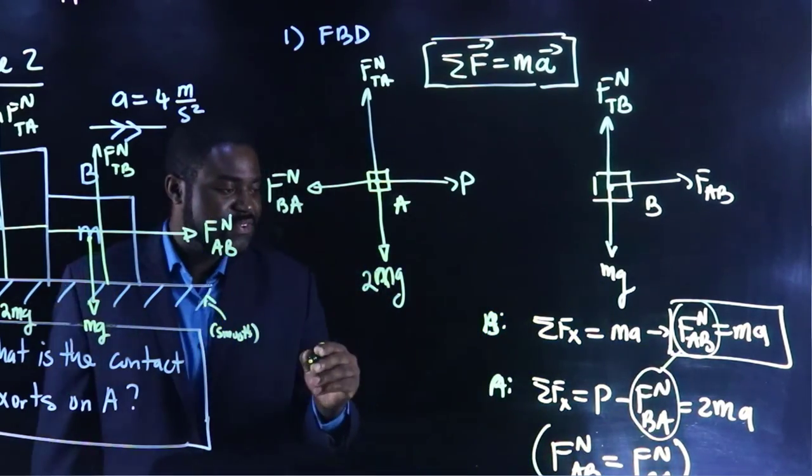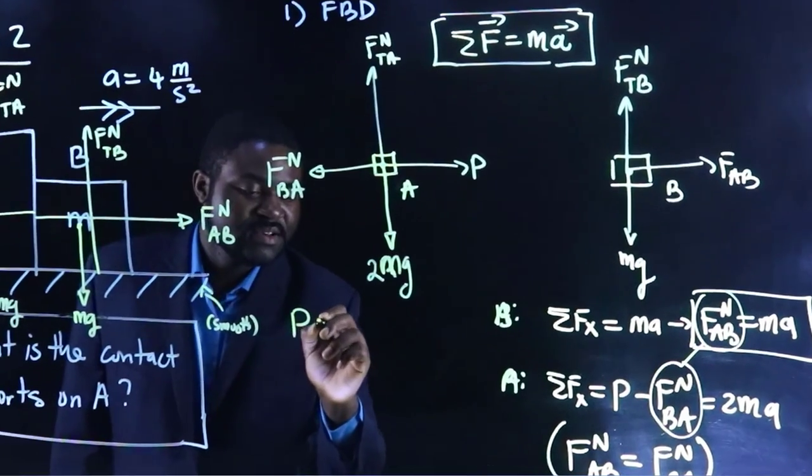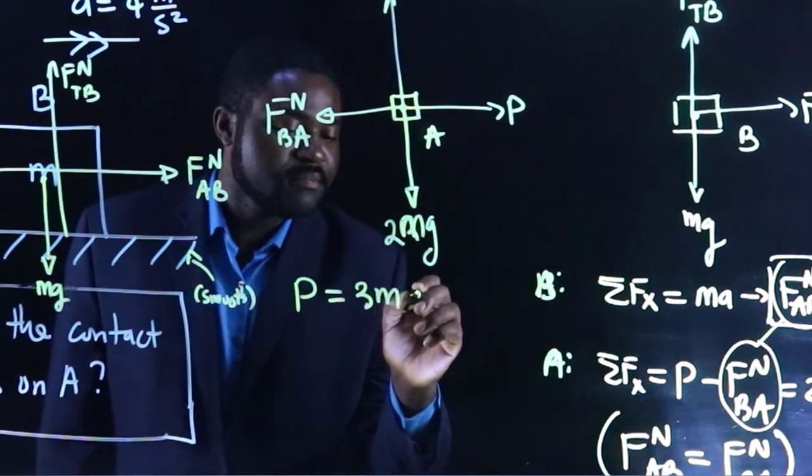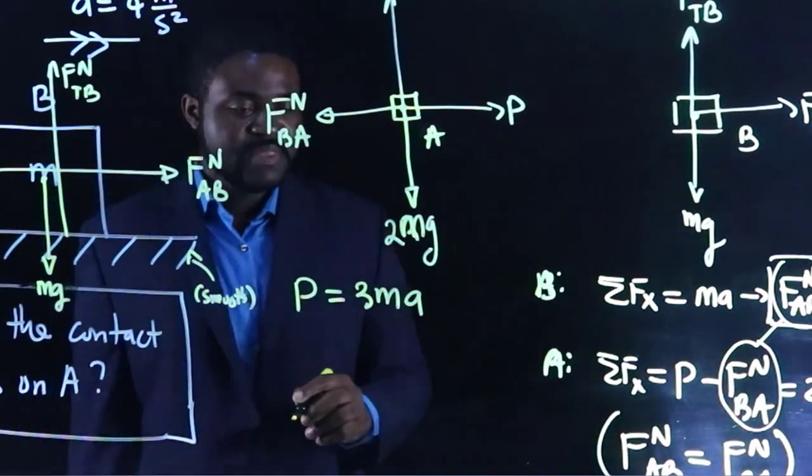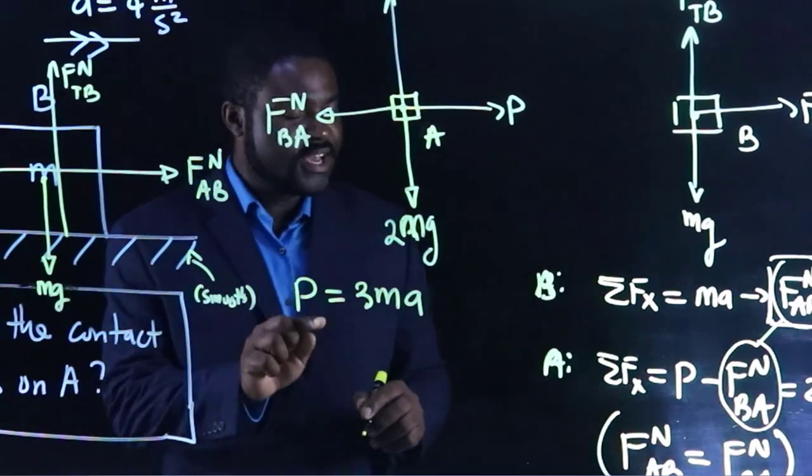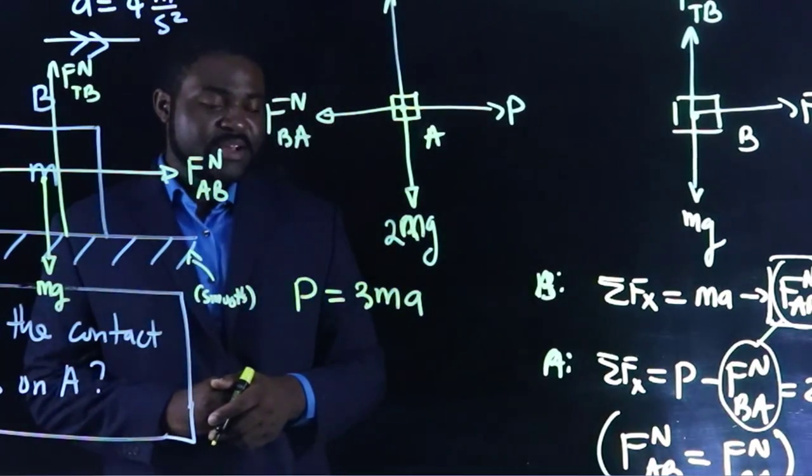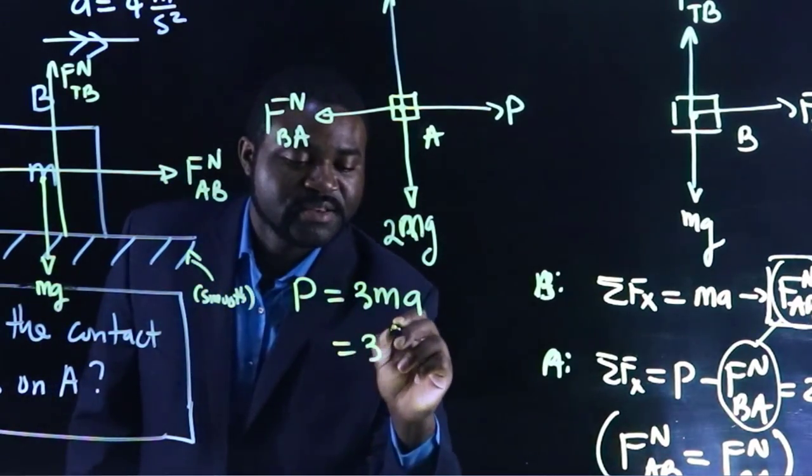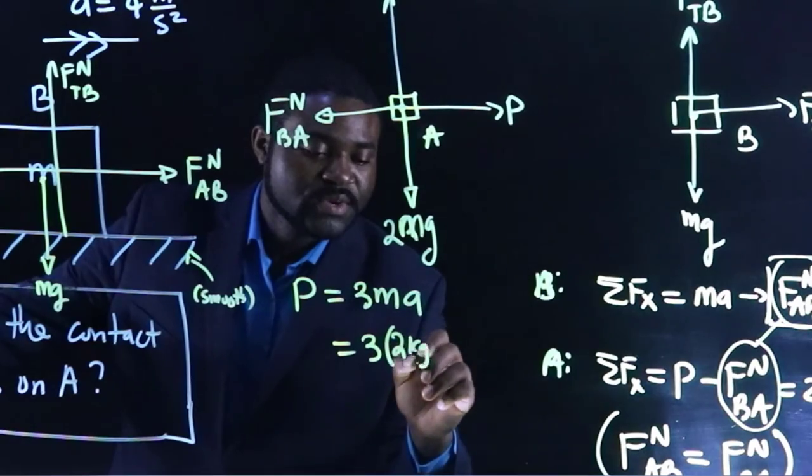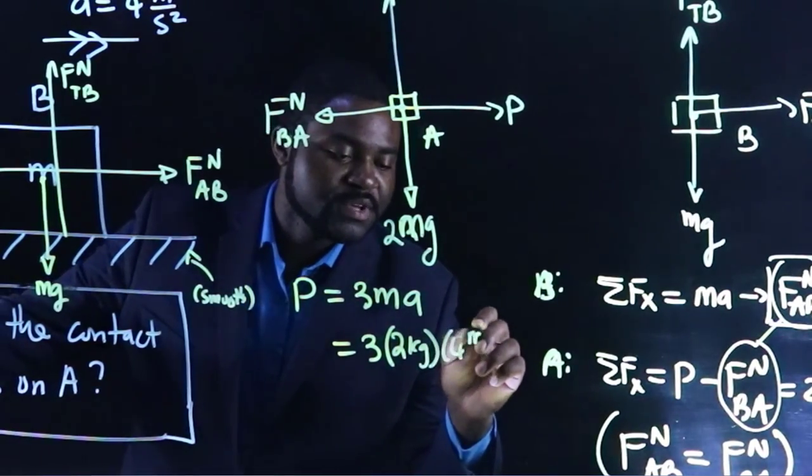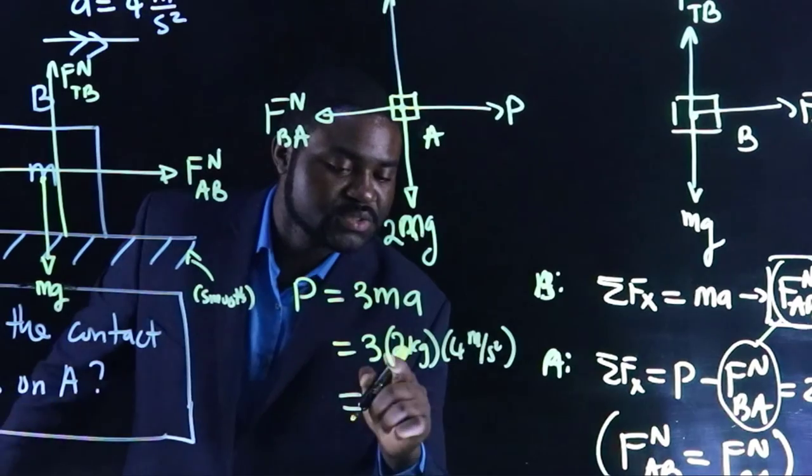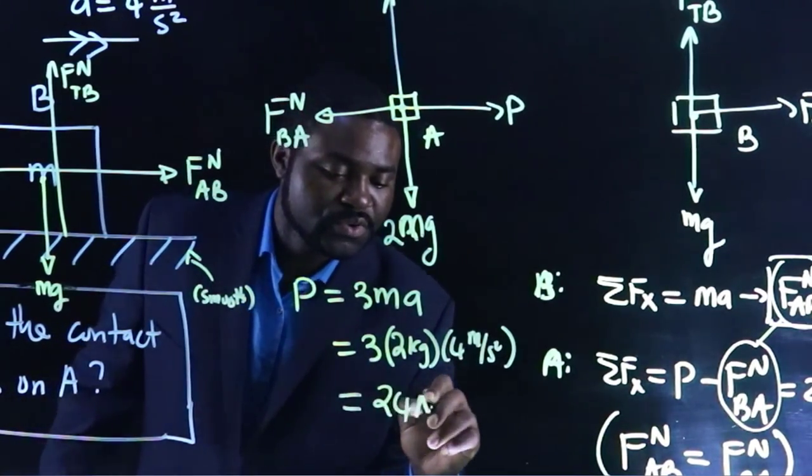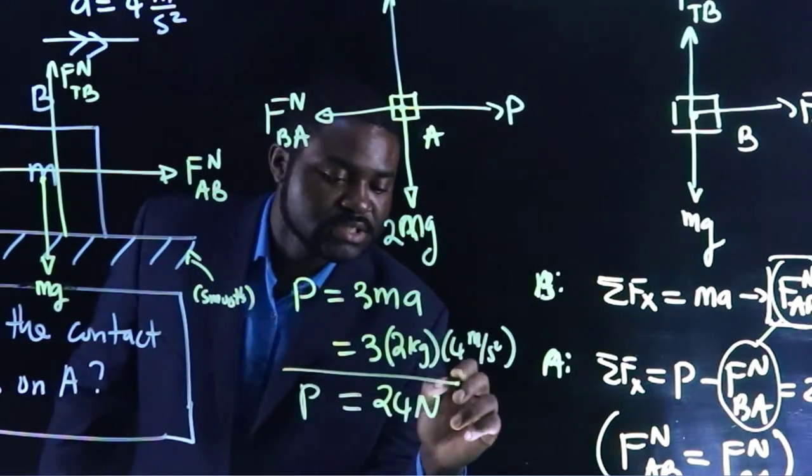What that means is the fact that P is equal to 3MA. We know P, which is equal to 3MA. So, that would mean that P is equal to 3M is 2 kilograms. A is 4 meters per square second. So, this is going to be 6 times 4, 24 newtons. This is the magnitude of P.